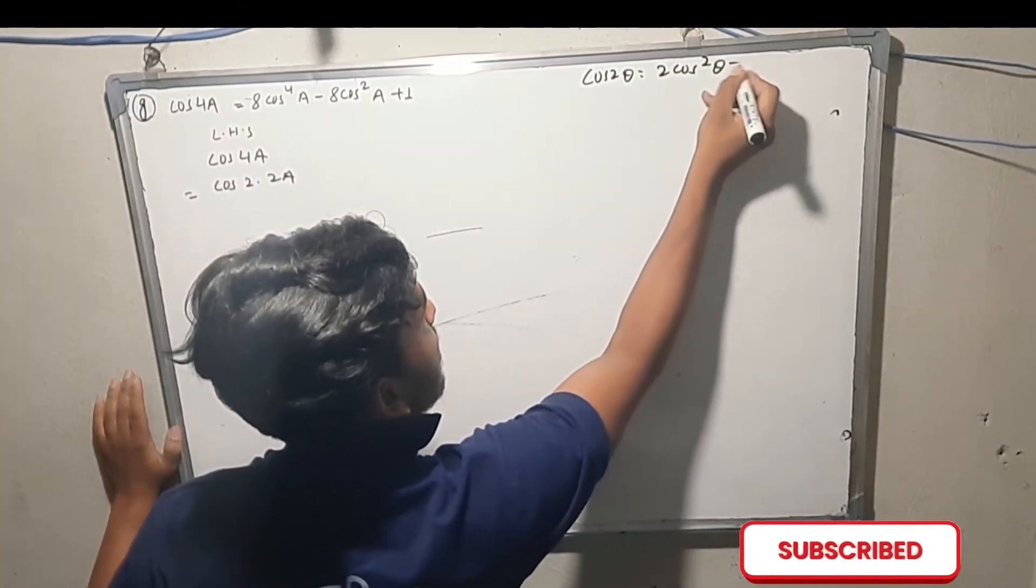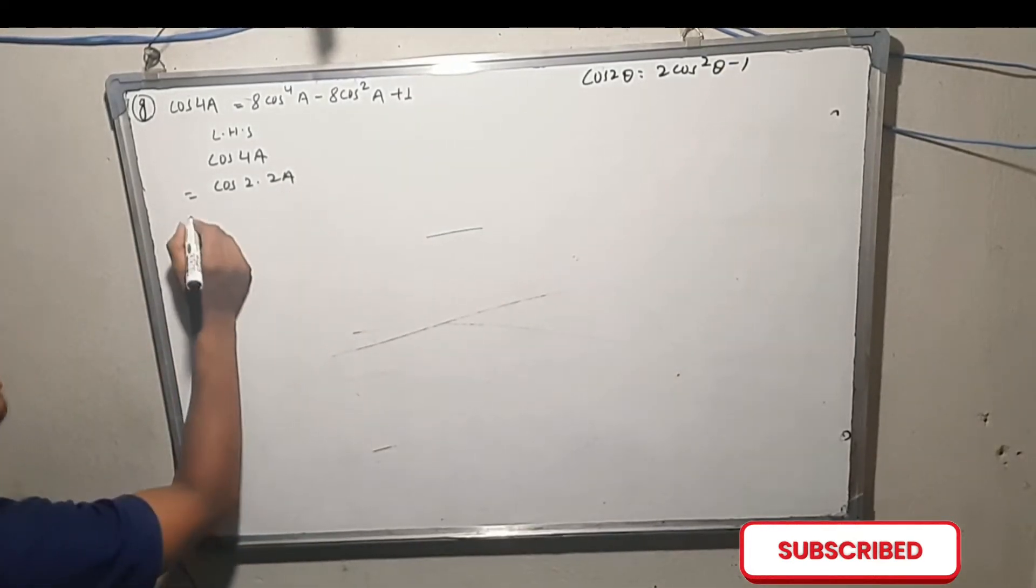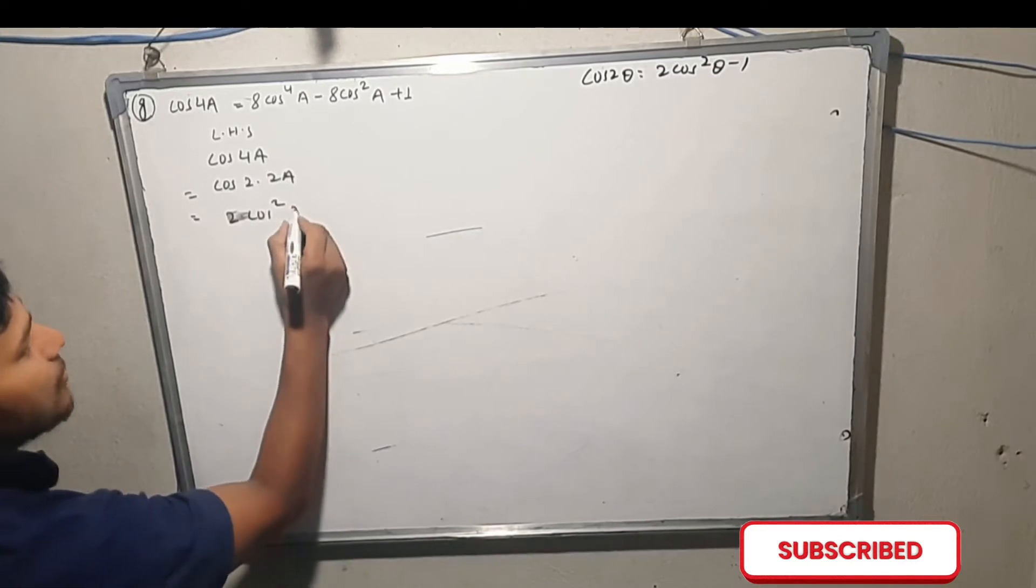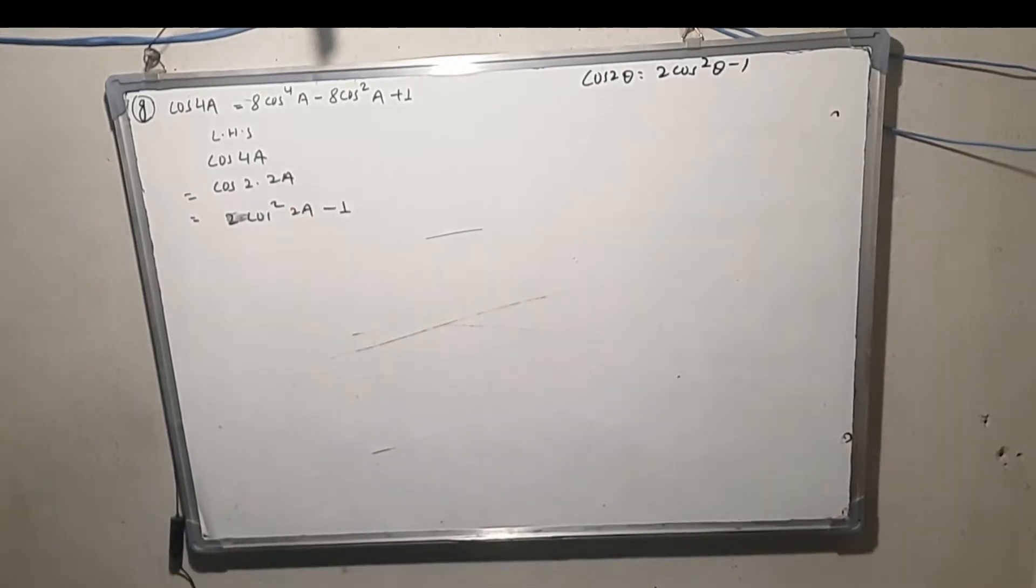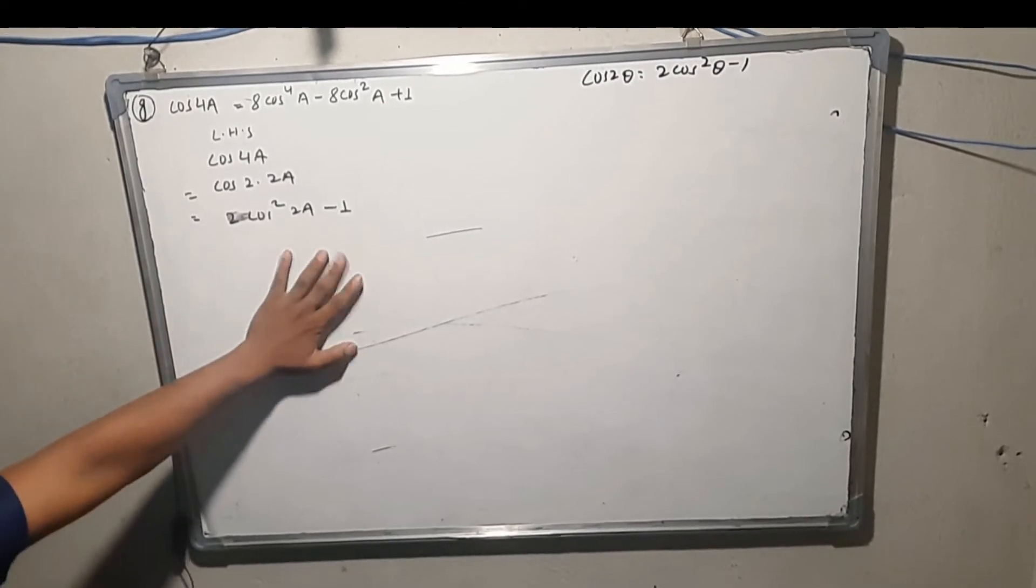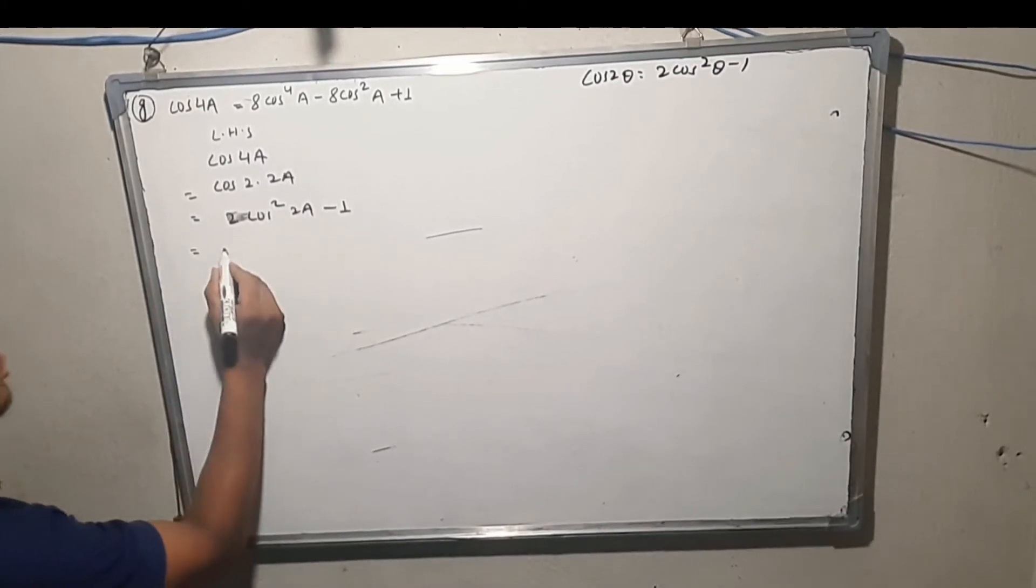2 cos squared theta minus 1. The theta is 2a. So, 2 cos squared 2a minus 1.